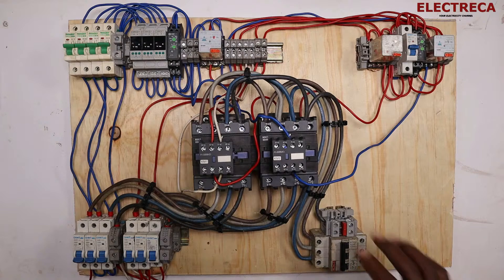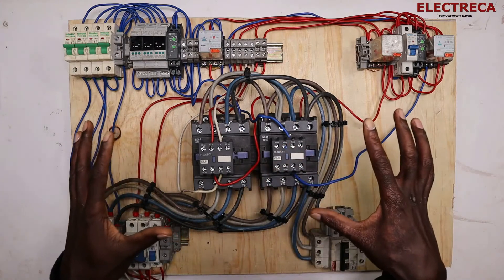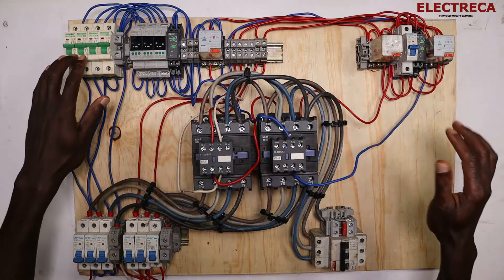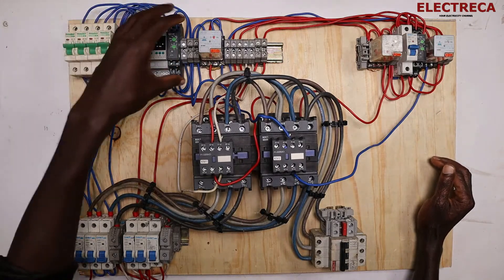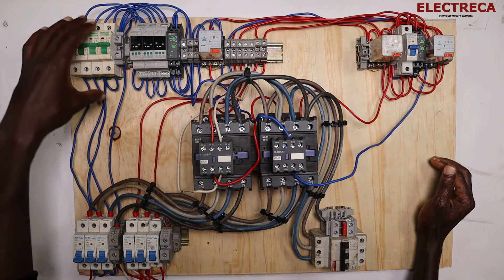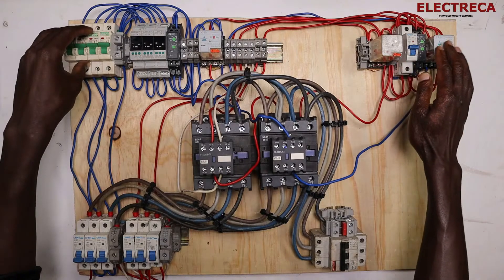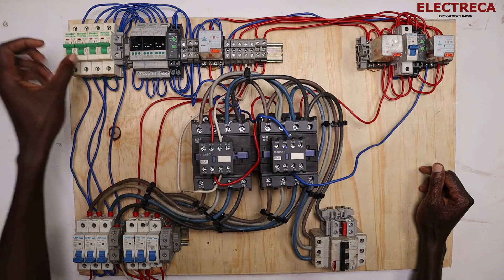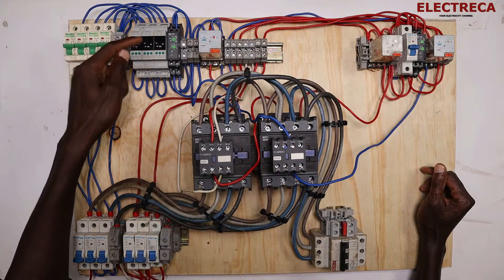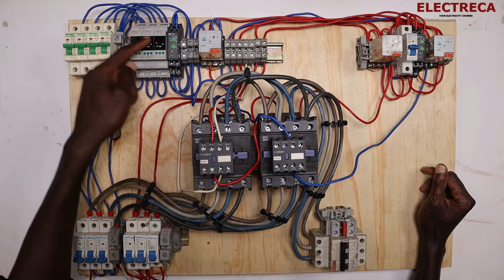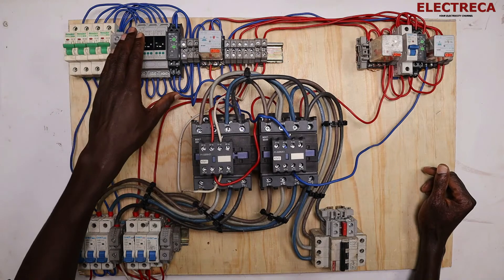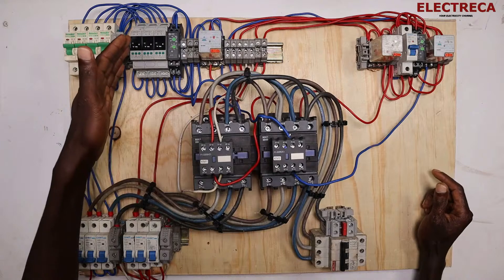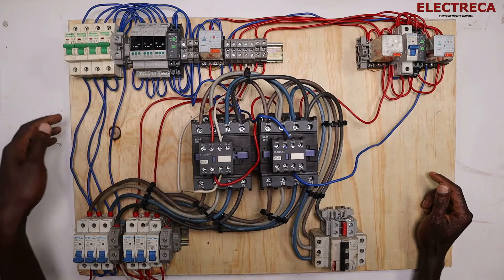Now let us look at the control circuit. We have two control circuits — the blue wires are the mains control circuit and the red wires are the generator control circuit. In the generator control circuit, we have three breakers supplying individual voltage comparators and then a fourth control breaker. The comparators are constantly monitoring voltage in this circuit to make sure that voltages are in the normal ranges.